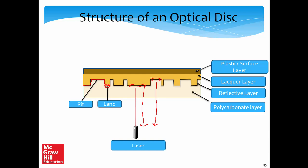After that, we have what is called a lacquer layer. The reflective surface is between the polycarbonate layer and the lacquer layer. The lacquer layer gives support to the lands and pits. Finally, on top of the lacquer layer, we have a plastic surface layer which covers the CD or DVD. A label with the name of the movie or software can be placed on this surface. The encoding is done via lands and pits, which are aberrations on the boundary between the lacquer and polycarbonate layers, and these aberrations encode the logical bits.